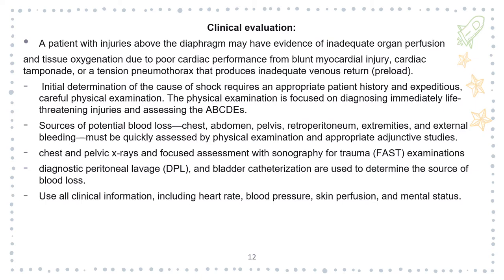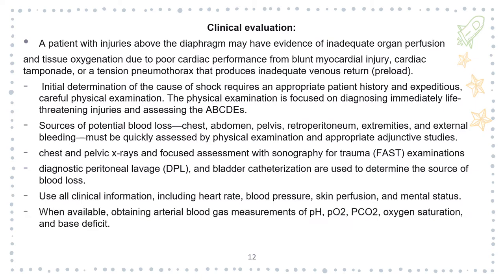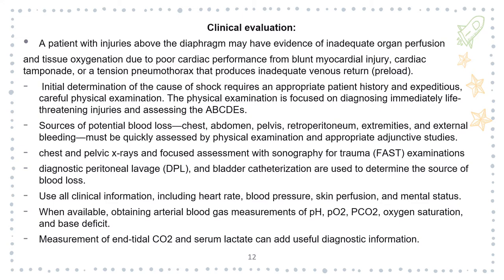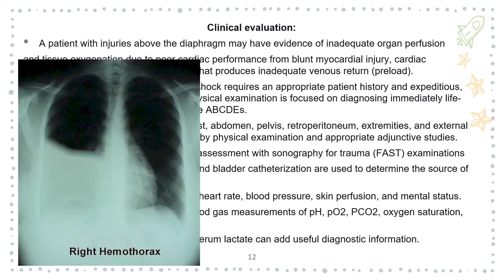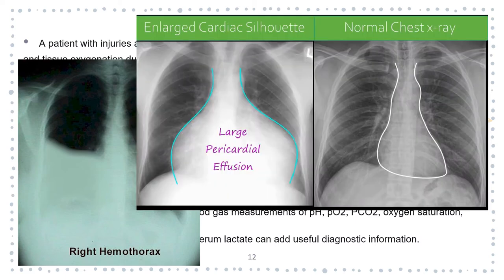Use clinical information including heart rate, blood pressure, skin perfusion and mental status. You also need to evaluate blood gas measurements — if available — oxygen saturation and base deficit, as well as serum lactate levels. On this X-ray you can see a sample of right hemothorax, with a fluid level visible. And on this image you can see the normal anatomy of the heart alongside a large pericardial effusion.